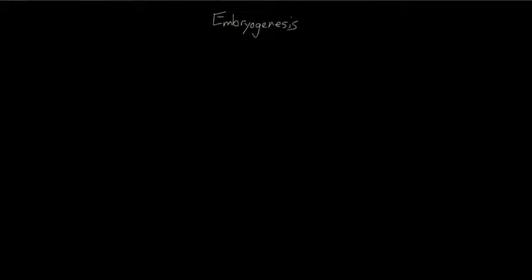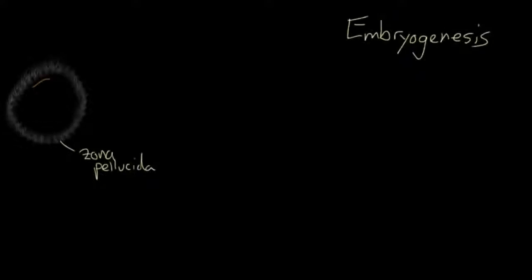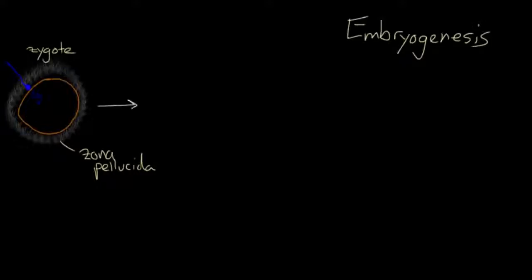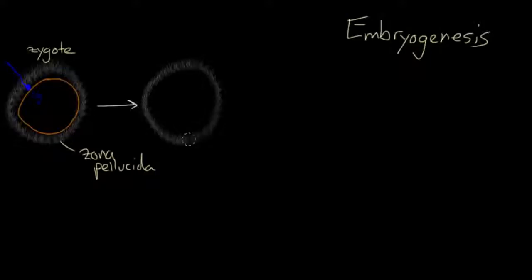We're going to talk about early embryogenesis. Say you're an egg cell and you have this nice thick outer glycoprotein coat called the zona pellucida, and you've got your plasma membrane just inside of that. A sperm has made its way through the zona pellucida and managed to get in through your plasma membrane and merged its genetic material with yours. You're now called a zygote, and you'd like to go on to form an embryo.